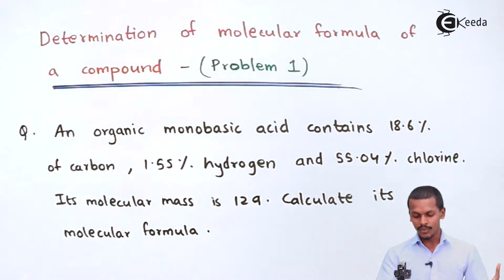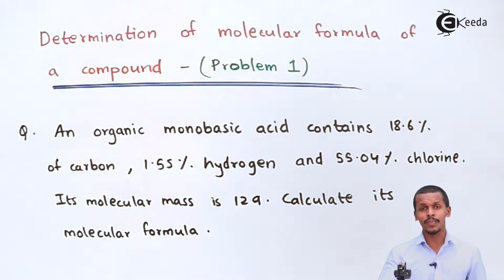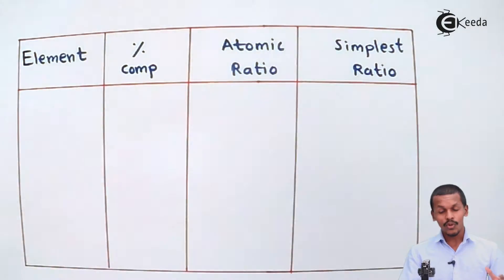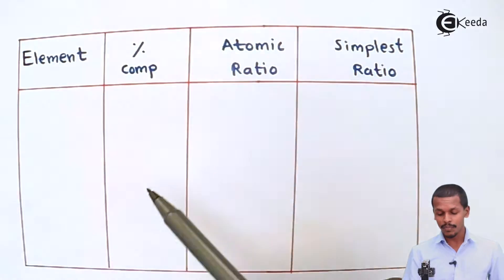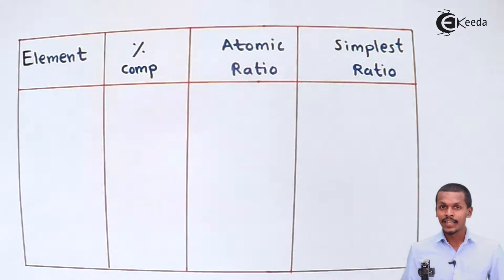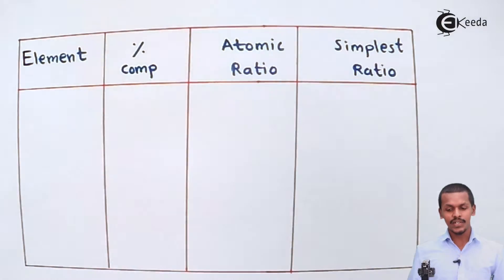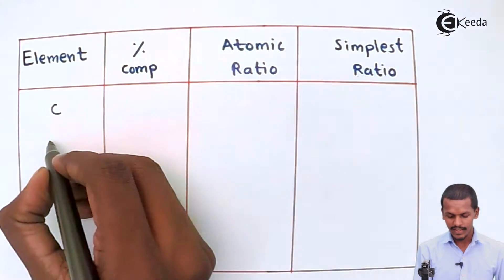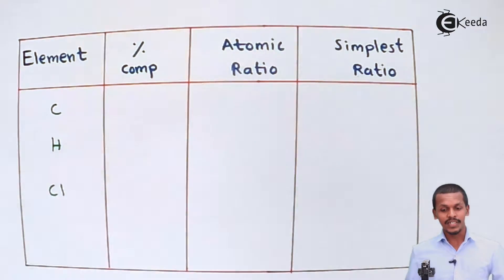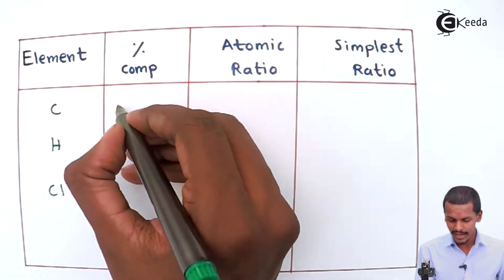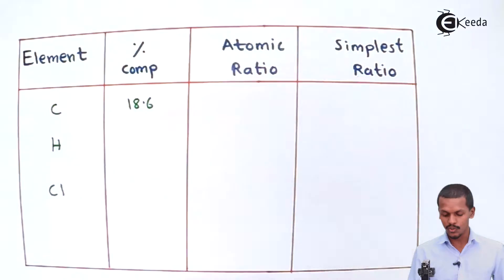To simplify the numerical, we draw a table with four columns: elements, percentage composition, atomic ratio, and simple ratio. The elements present are carbon, hydrogen, and chlorine. The percentage of carbon is 18.6, and for hydrogen it is 1.55.